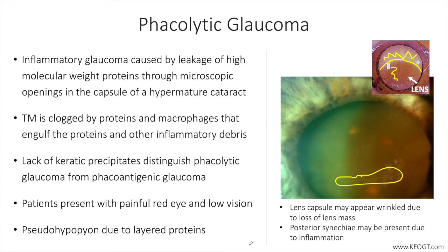Cataract extraction should take place as soon as possible while still allowing some time to control IOP and clear the edematous cornea when possible. It is important to note that combining glaucoma surgery like trabeculectomy with cataract extraction is not needed in this circumstance, since cataract surgery alone is often curative unless the disease process has been present for a long period of time — meaning months — and the outflow system of the eye has been severely compromised.